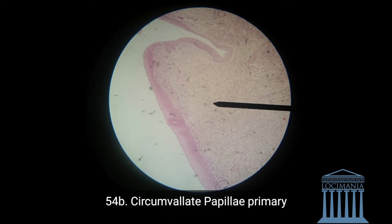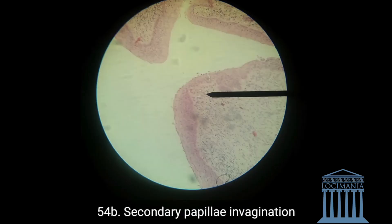So what exactly is the secondary papillae? Well, it's just the invagination. It's not the whole strawberry — just the invagination, as you can see here. It is the connective tissue that invaginates on the wall.